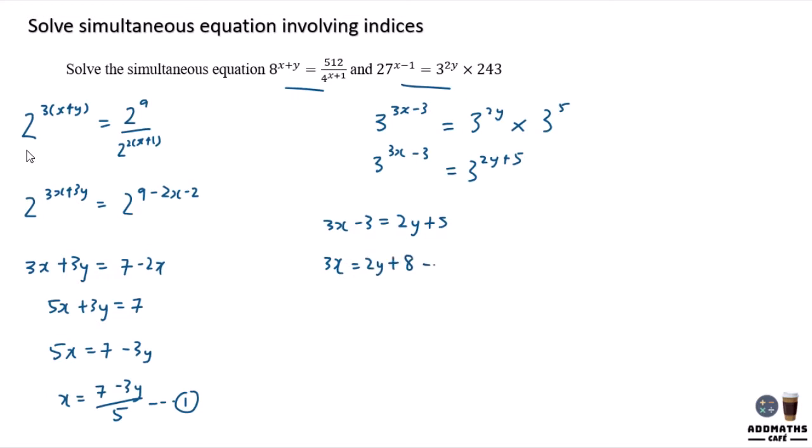And your x here can be substituted. So this is your 2. So substitute with 7 minus 3y over 5 equal to 2y plus 8. You can actually times 3 and bring the 5 to the opposite.